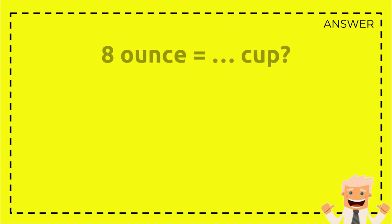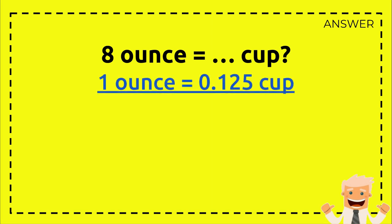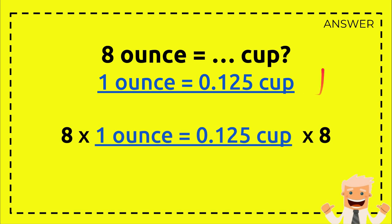First we write down the question again: 8 ounce equals how many cup? And then this is the formula just like what I wrote before: 1 ounce equals 0.125 cup. And this is how we answer the question. First, to answer this question we need to put this formula, 1 ounce equal this number, to here.